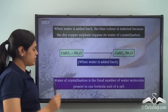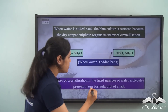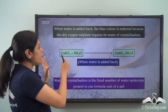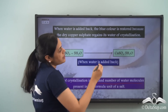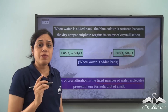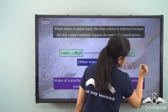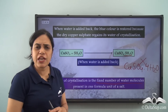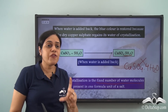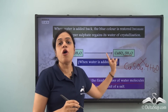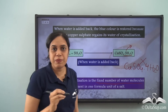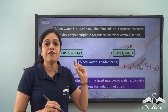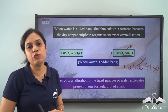Now, what is water of crystallization? Water of crystallization is the fixed number of water molecules present in one formula unit of a salt. Remember, you cannot write this as CuSO4·4H2O or ·3H2O or any number of your choice — it is fixed. So with one formula unit of copper sulphate, 5 molecules of water will be present. For copper sulphate, the water of crystallization is a fixed number: 5 molecules of water.